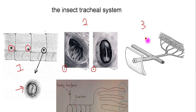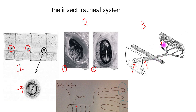Diagram number three is a general diagram of the tracheal system of an insect. You can see the spiracle on the surface of the animal, and connected to it is a network of tubes collectively called the tracheal system. The first and widest tube is called the trachea, which subdivides into smaller, finer tubes called tracheoles that terminate in the cells of the insect. The ends of these tracheoles, at the point where they enter the tissues, represent the true gas exchange surface of the tracheal system.